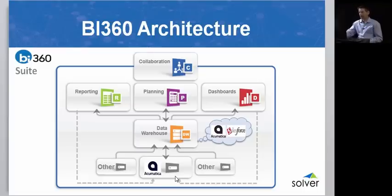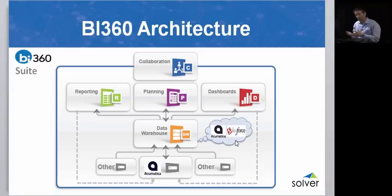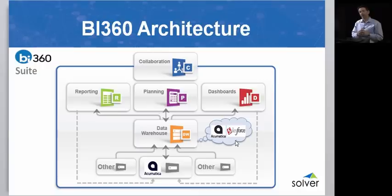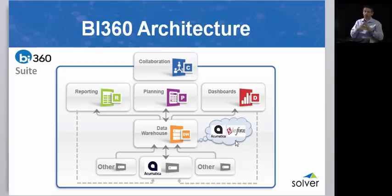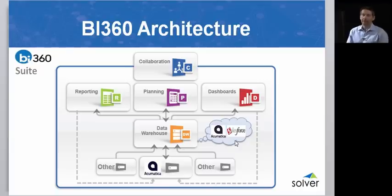The second type of integration is shown with the cloud on the right. If Acumatica is in the cloud where you cannot install BI360, we have an integration that uses the Acumatica API, just like we have a similar integration to tools like Salesforce.com. We can bring that data directly into the BI360 data warehouse, which can be installed on-premises or in another cloud — that's up to you. So with those integrations, you basically get access to the Acumatica data.